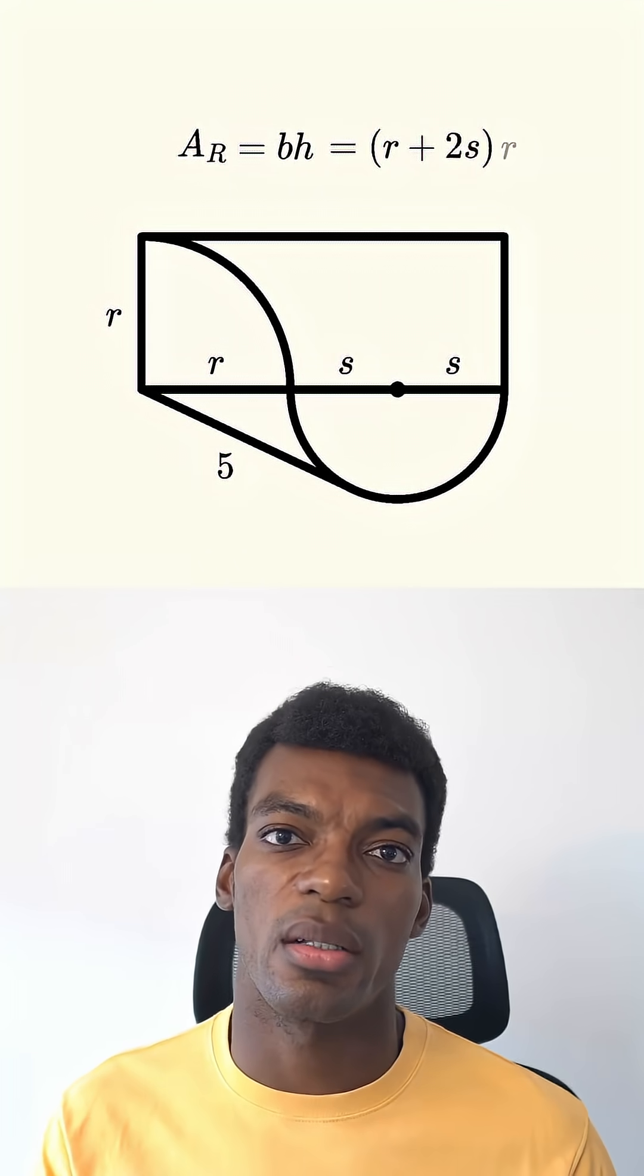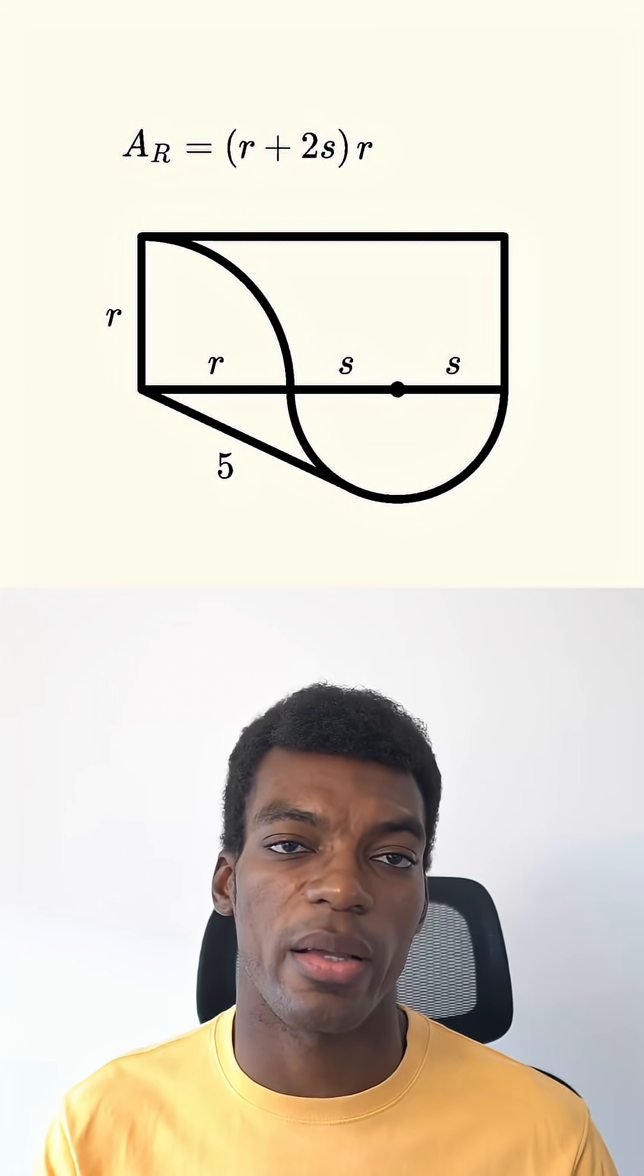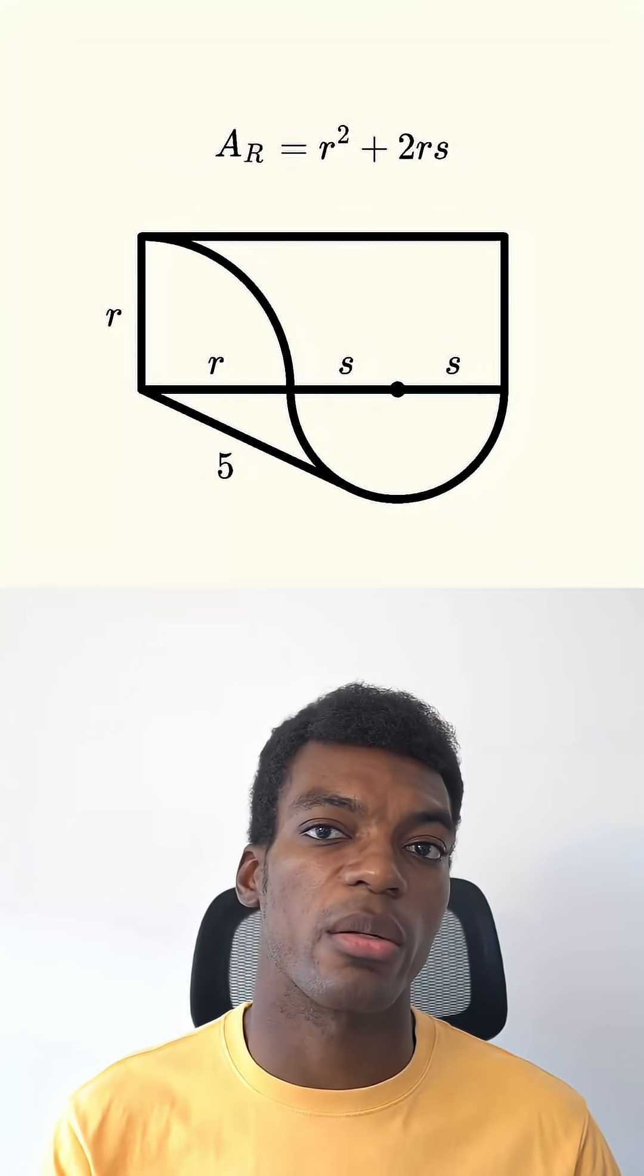Putting the area of the rectangle in terms of the radii of the two circles, we have r plus 2s times r, and after distributing the r, we have A_R is equal to r squared plus 2rs.